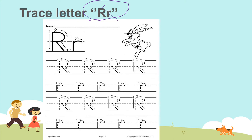Let's trace first your big letter R. First is here — one, and then here, go at the top, then two, and then we have three. Okay, so this is for your big letter R. Let's try to trace big letter R again: one, two, and then three.